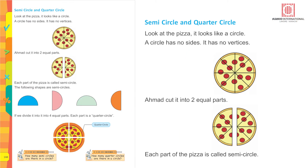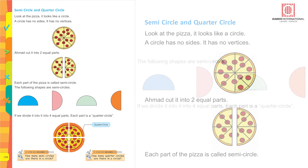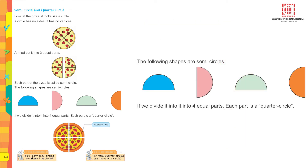Look at the pizza — it looks like a circle. A circle has no sides and no vertices. Vertices means corners. Ahmed cuts it into two equal parts — each part of the pizza is called a semicircle, which means half a circle. The following shapes are semicircles.